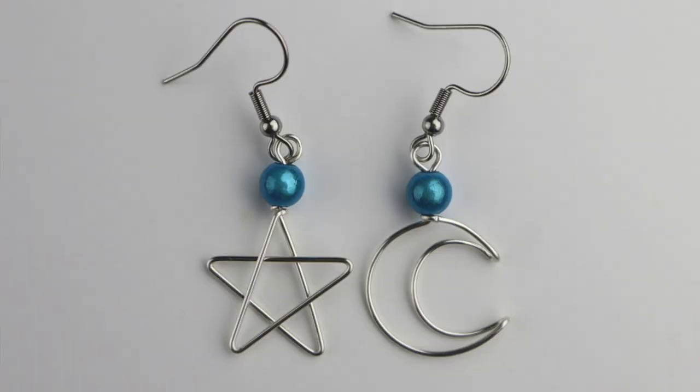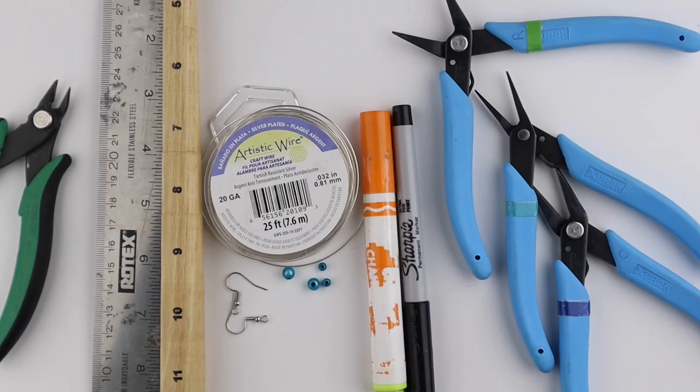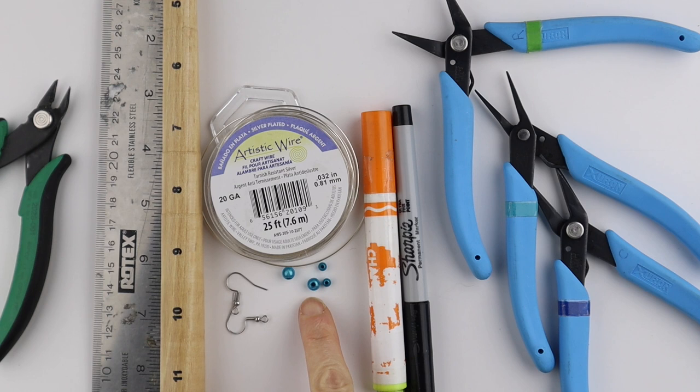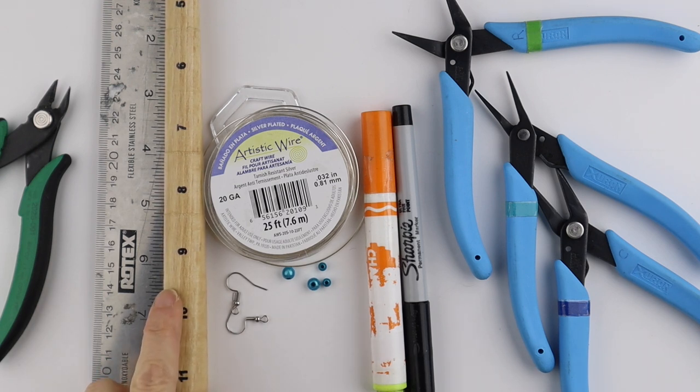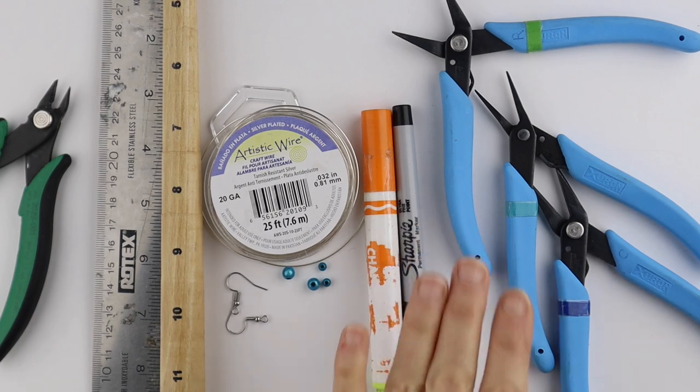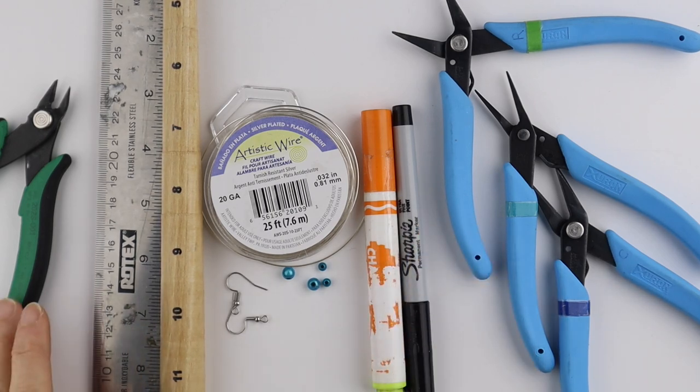Today we're going to make some star moon earrings. What you're going to need for this project is 20 gauge wire, earring hooks, some beads either 6 or 4mm. You'll need a ring mandrel to make the round form of the moon or you can use markers. You'll need flat pliers, round pliers, a ruler and some cutters.